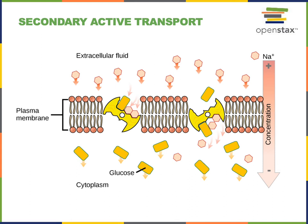However, glucose can enter the cell by active transport. There are no primary active transport proteins that can force glucose against its concentration gradient into the cell. It is only the secondary active transport mechanism that forces glucose into the cell, where the driving energy is the movement of sodium down its concentration gradient. Therefore, the primary active transport of sodium by the sodium-potassium pump creates a concentration gradient that drives active transport of another solute — in this case, glucose.